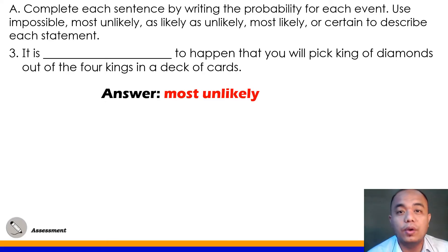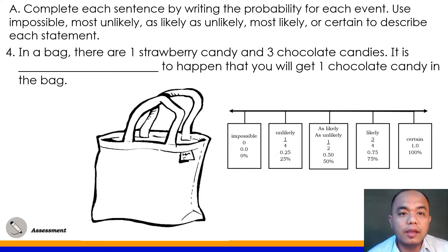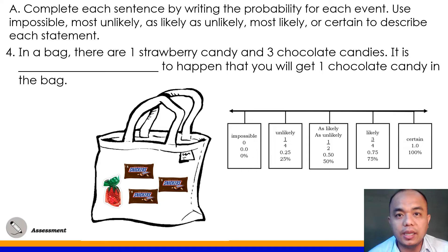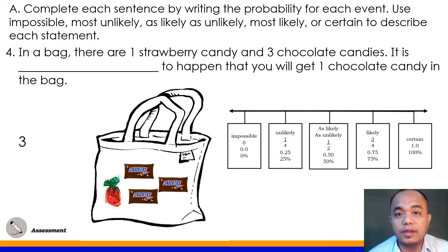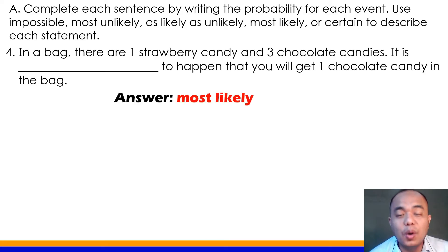Number 4: In the bag, there are 1 strawberry candy and 3 chocolate candies. It is blank to happen that you will get 1 chocolate candy from the bag. We have 3 chocolate candies out of 4 total candies, so that's 3/4, which equals 0.75. Plotting 0.75 on our scale, the answer for number 4 is most likely — there's a big chance of picking a chocolate candy.